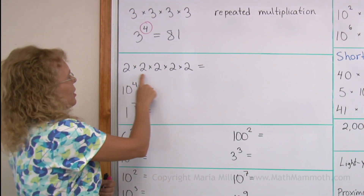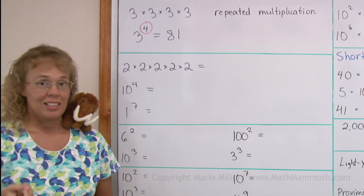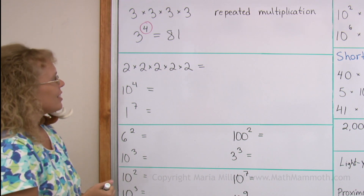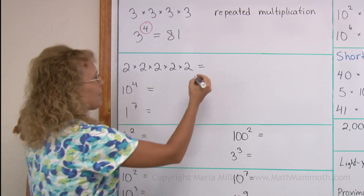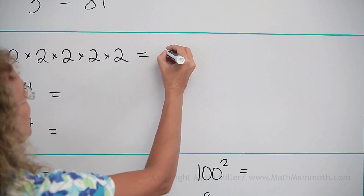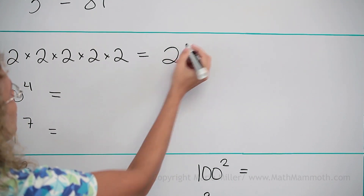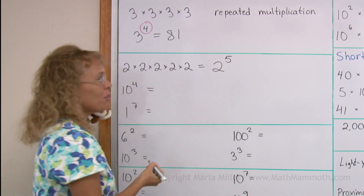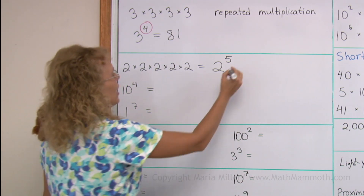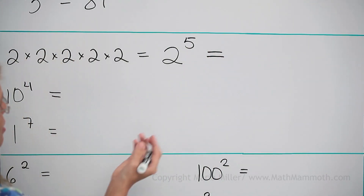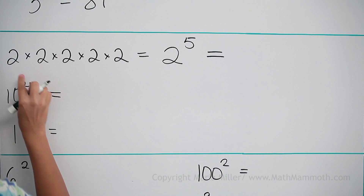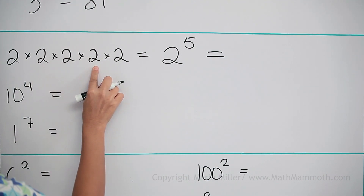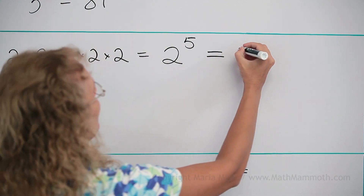Let's try this one. It is also a repeated multiplication, so we can write it with less space. 2 is the base number and the exponent shows 2 is repeated five times: 2 to the fifth power. To solve it: 2 times 2 is 4, times 2 is 8, times 2 is 16, times 2 is 32.